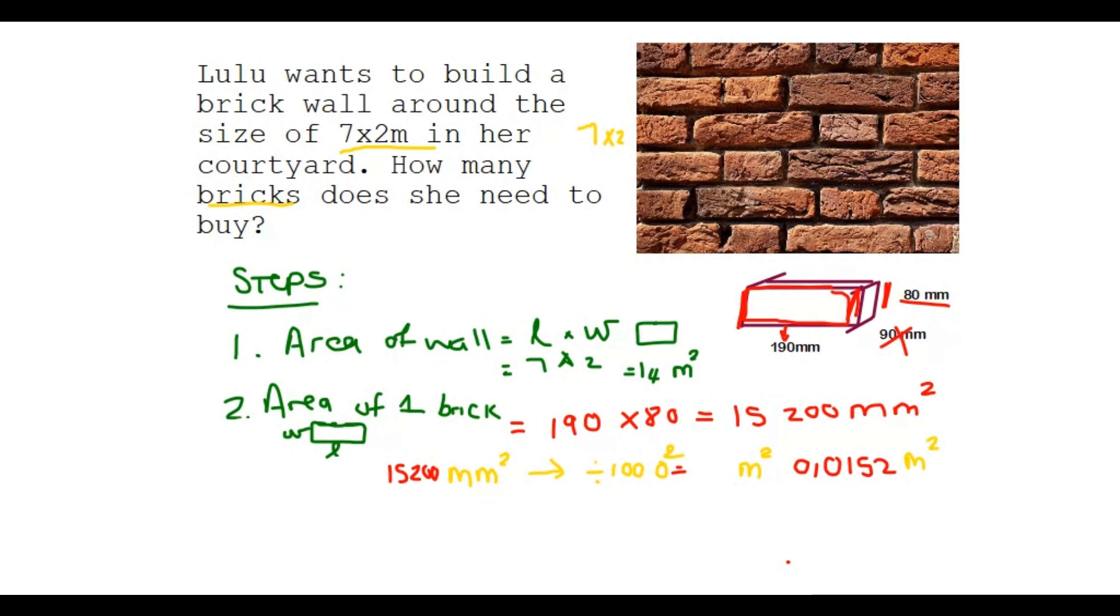Let's not lose sight of where we are. We finished step one. We finished step two. We now have the units, or we have the answers in the same units. We have 14 square, and we have 0.0152 square meters. So what do we do? What's our third step? We divide.